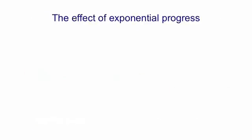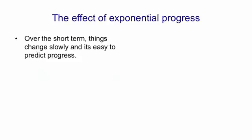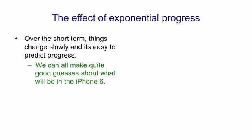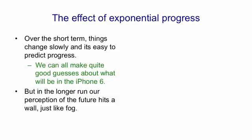The development of technology is also typically exponential. So over the short term, things appear to change fairly slowly, and it's easy to predict progress. All of us, for example, can probably make quite good guesses about what will be in the iPhone 6. But in the longer run, our perception of the future hits a wall, just like with fog.